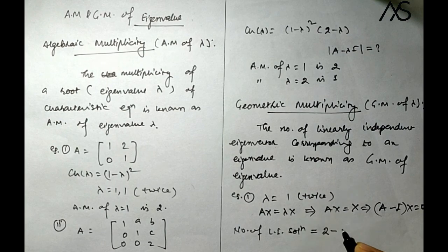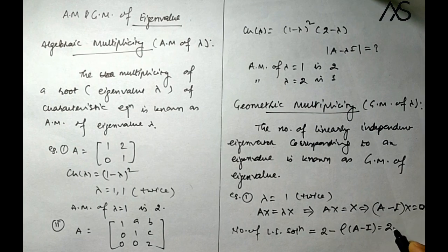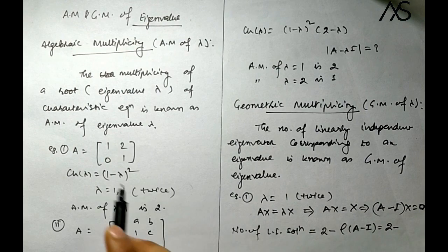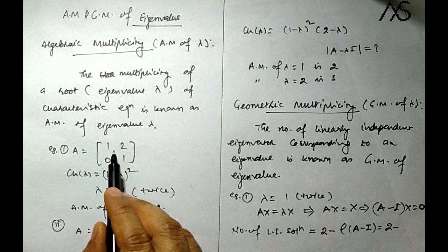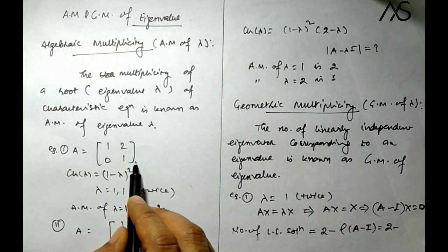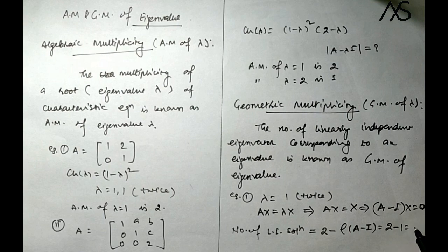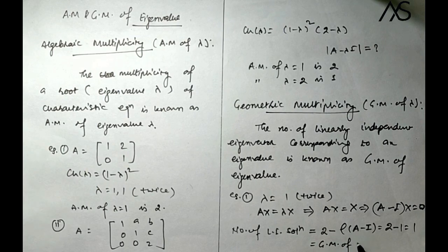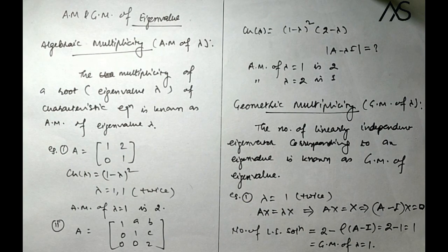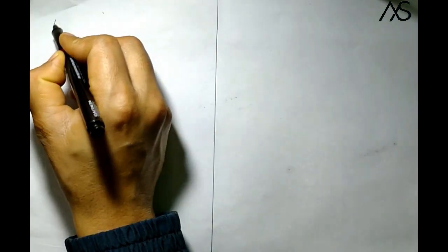For this 2×2 matrix, number of unknowns is 2 and rank of (A minus I) is 1. So the number of linearly independent solutions is 2 minus 1 equals 1. Therefore GM of lambda equals 1 is 1.